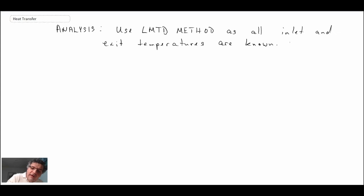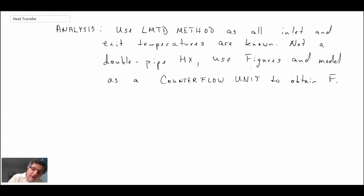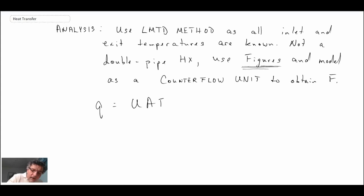Note that this is not a double pipe heat exchanger. There are correction factors that exist when you're dealing with heat exchangers that are not double pipes. What we're going to do is model it as a counter-flow double pipe unit with a correction factor F obtained from a figure. The equation we're going to use involves delta T_m, our log mean temperature difference.